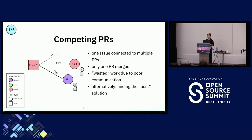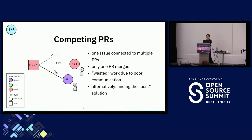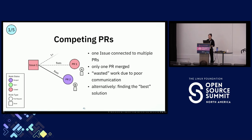Sometimes contributors tend to be over-eager to contribute their own implementations without communicating. This is what we've observed in our competing PRs workflow type. Its graph structure is a closed issue that's been fixed by multiple PRs, but only one of those PRs ends up being accepted or merged into the project. This workflow type has an associated malpractice of wasted work due to poor communication. On the other hand, this workflow type also allows projects to be more picky about the implementations they accept—in the Discord.py example, the initial PR was rejected because of performance issues, and the maintainers were able to pick the best implementation.